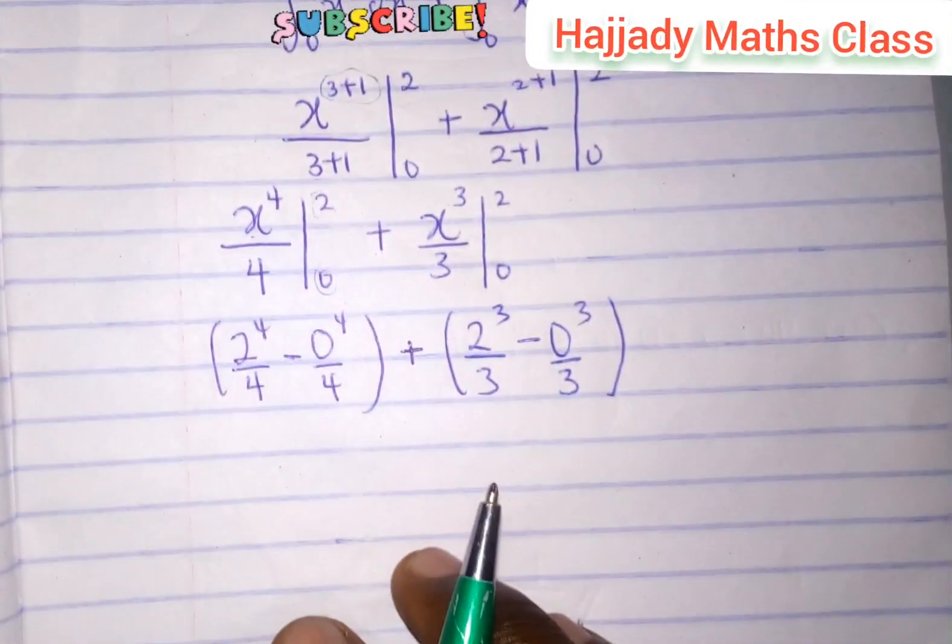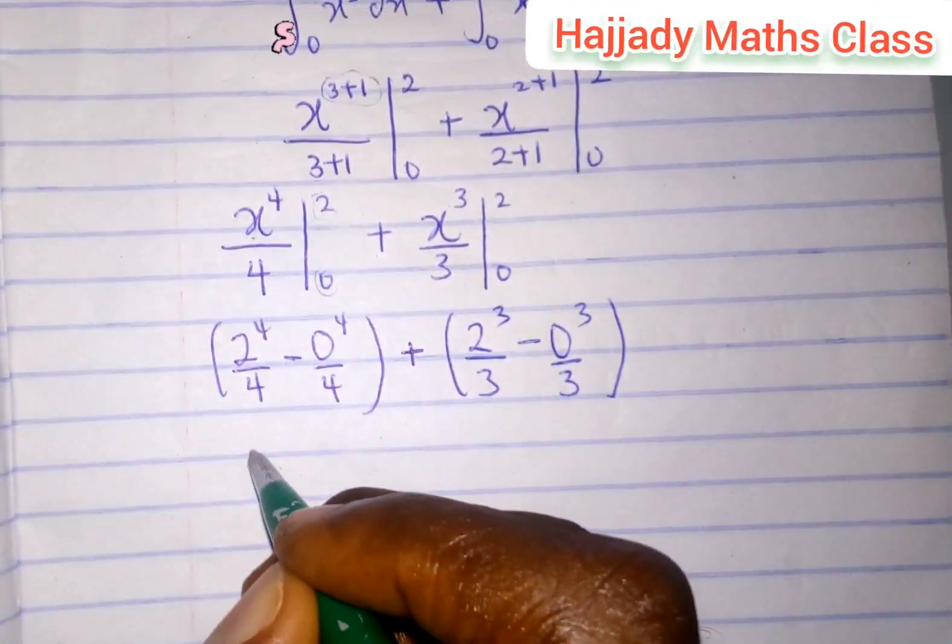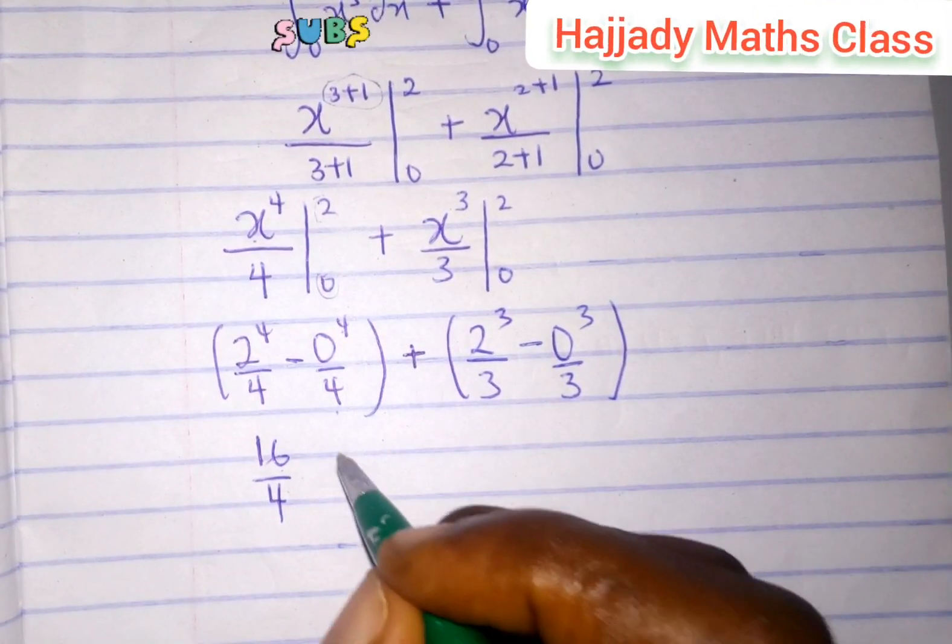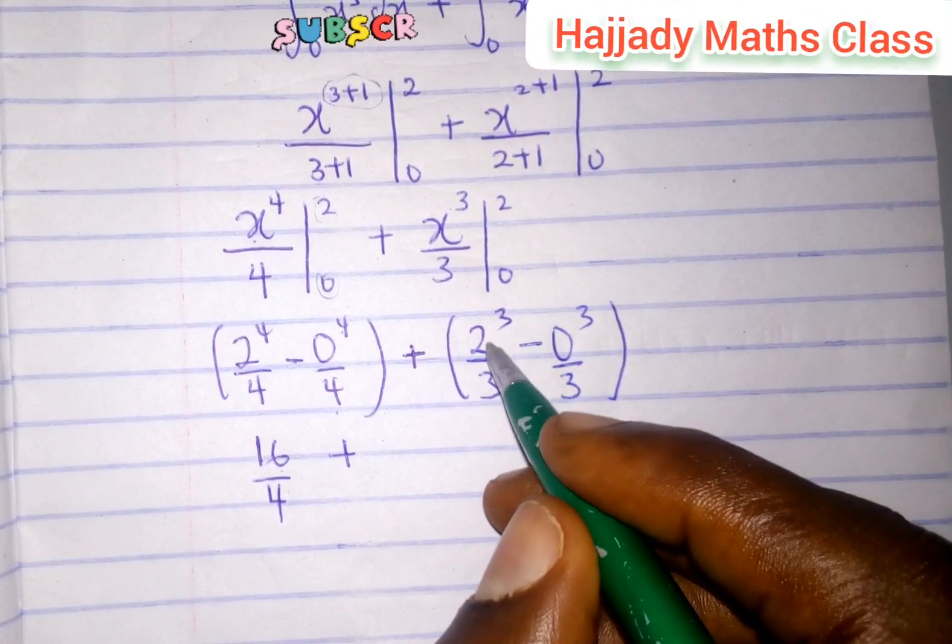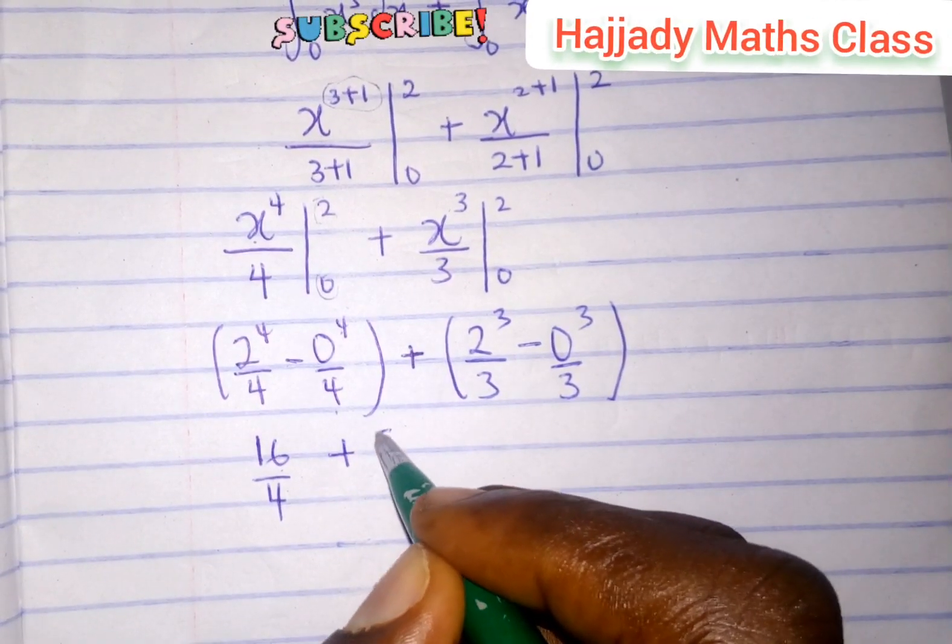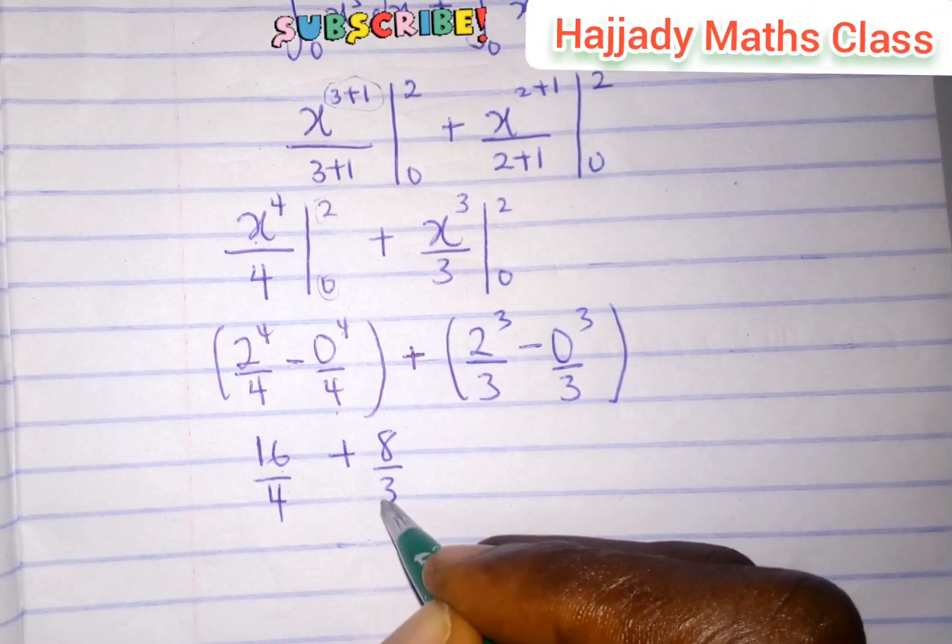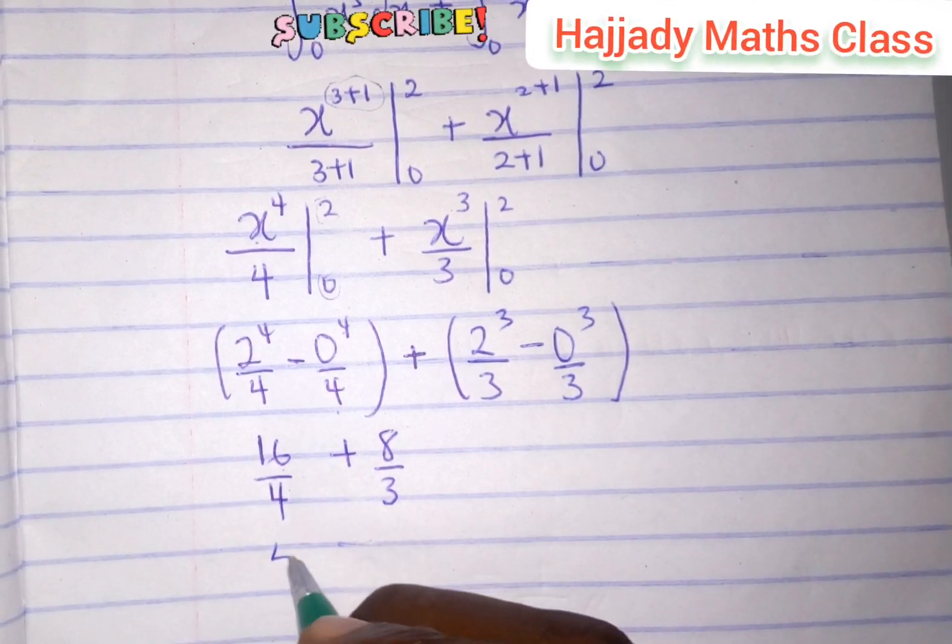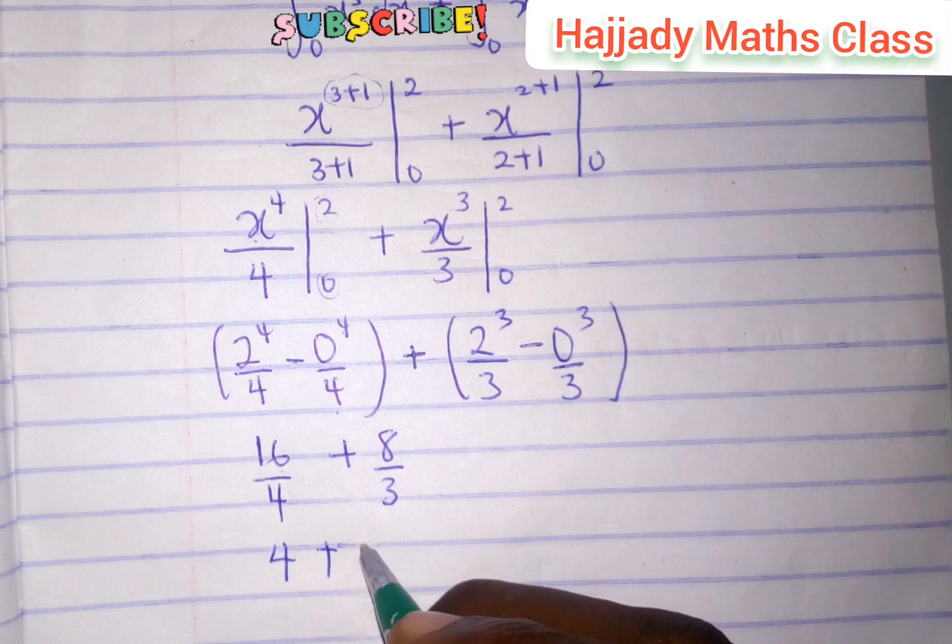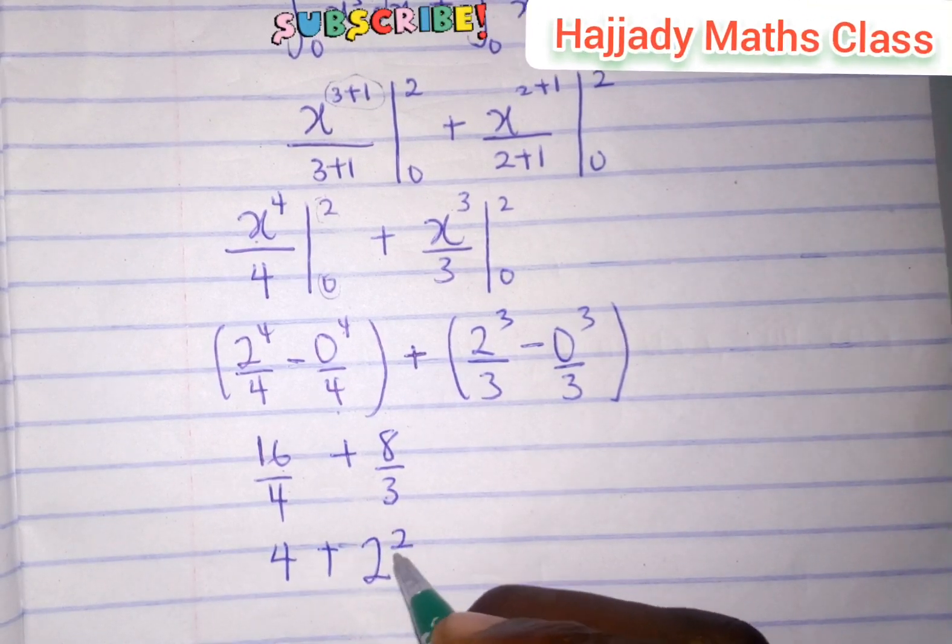You will agree with me here that this is the same as 16 all over 4, because 0 over anything is 0, plus, you agree with me here that we have 2 raised to the power 3 to be 8, all over 3. And 16 over 4 is the same as 4, plus 8 over 3.